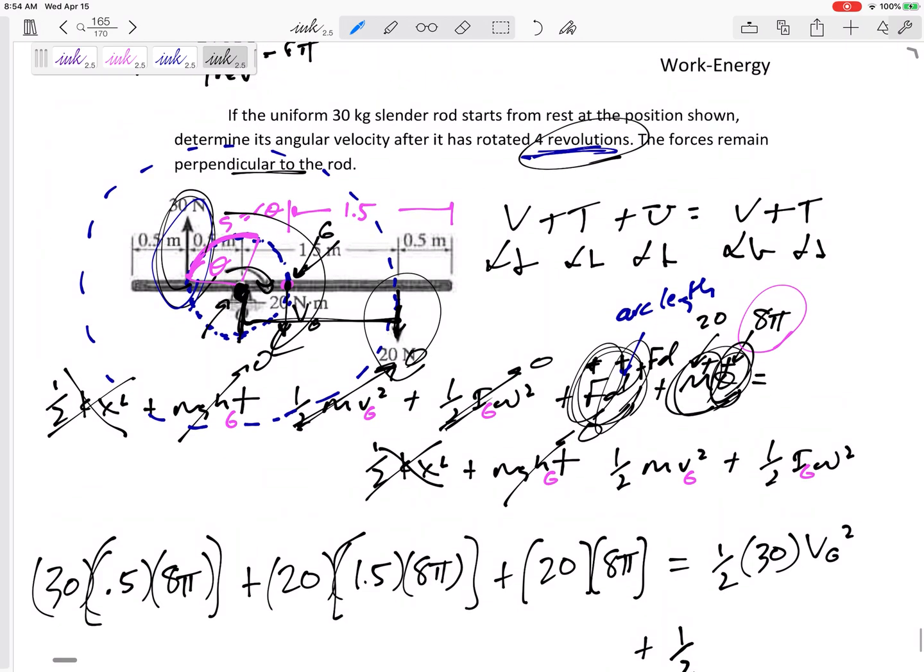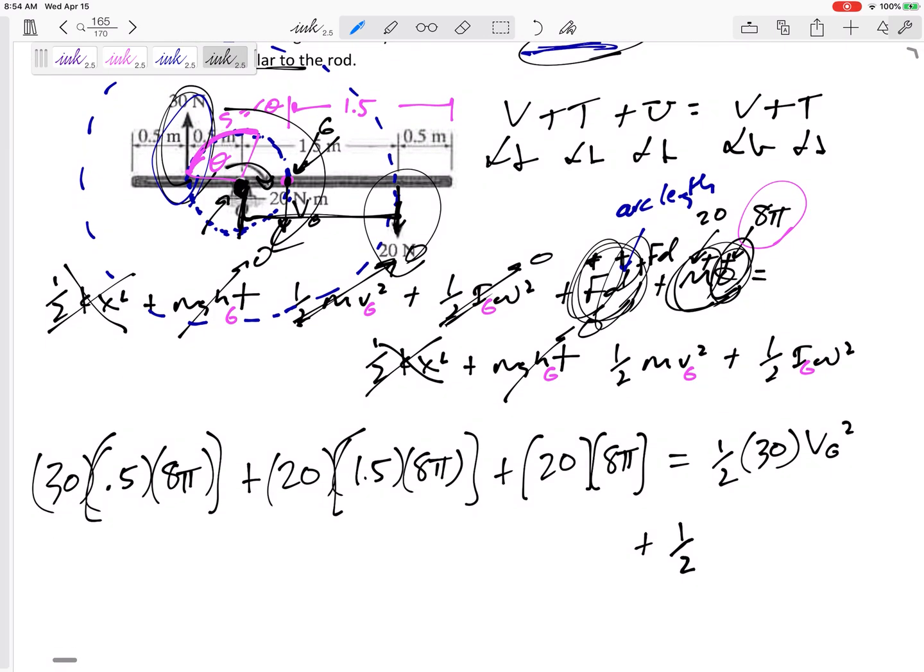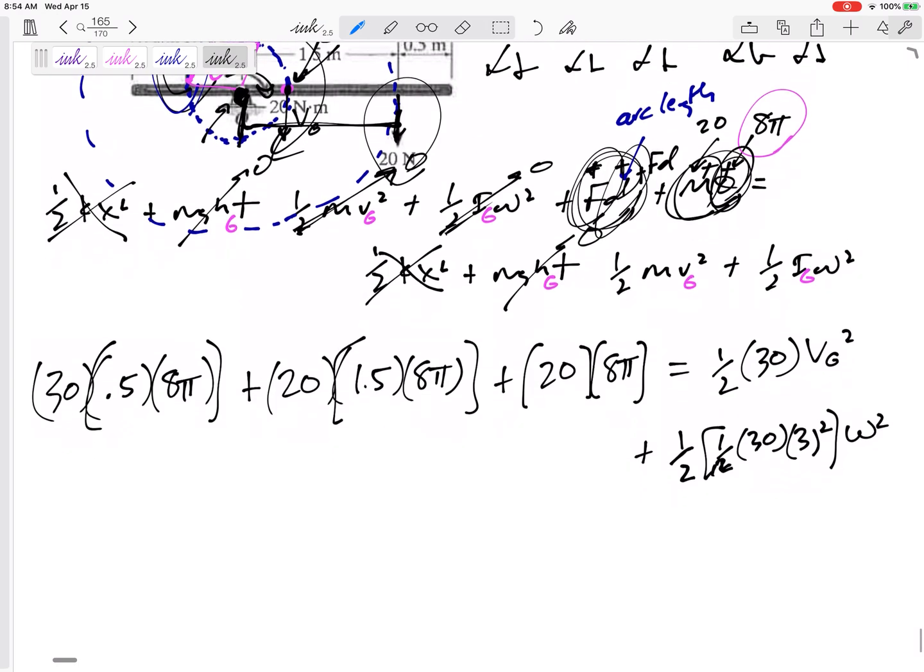Plus one-half I. It's a slender rod, so this would be I of G of the slender rod: one-twelfth, one-twelfth m l squared times omega squared. So there's my equation.